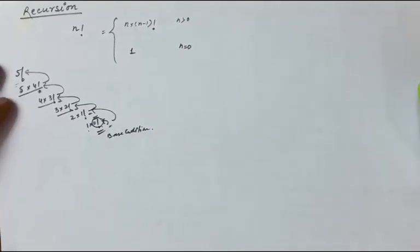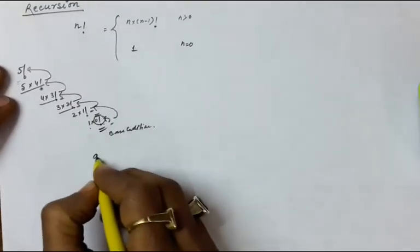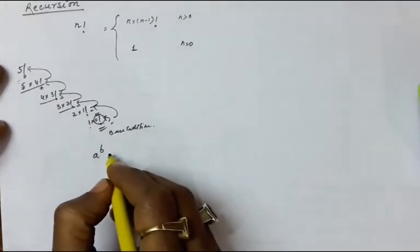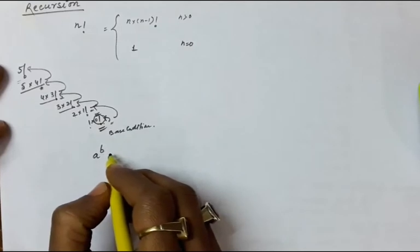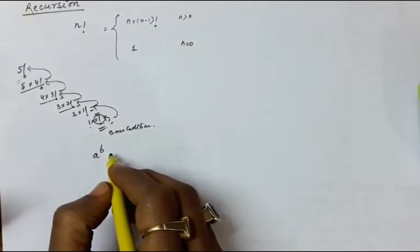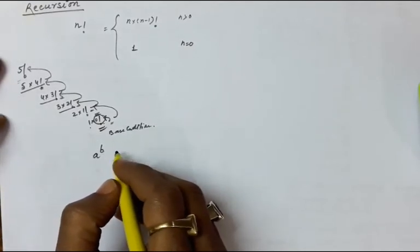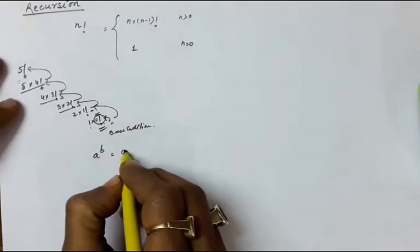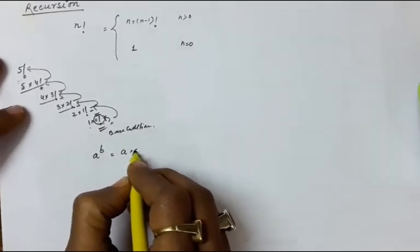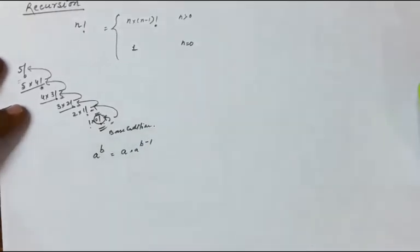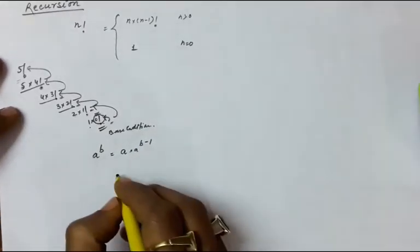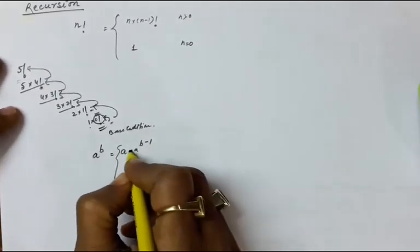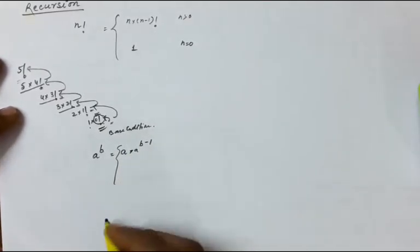Let us take another example. Suppose you have to compute a raised to the power b, and you do not have the power operation. In C also there is no power operation; power is performed by repeated multiplications. So a raised to the power b is a into a raised to the power b minus 1 — defined in its own terms.